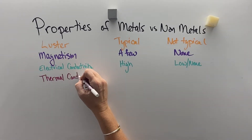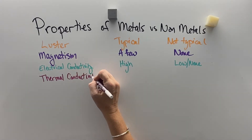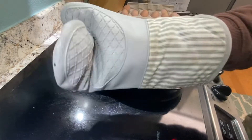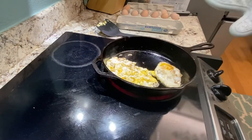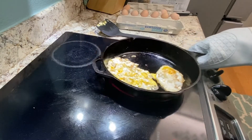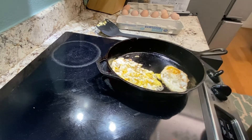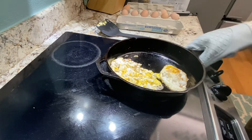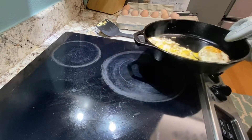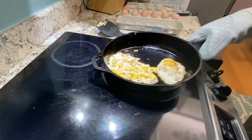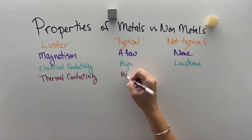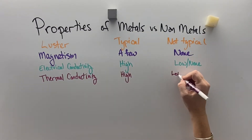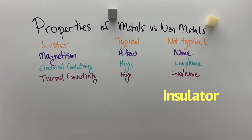Thermal conductivity is another property where we have times that we want heat to pass through a substance and times that we do not. A potholder is an insulator made of non-metals that keeps our hand from getting burned, while this metal pan and the glass below allow heat to transfer through into the food. Typically, metals have higher thermal conductivity and non-metals are lower — they're considered insulators.